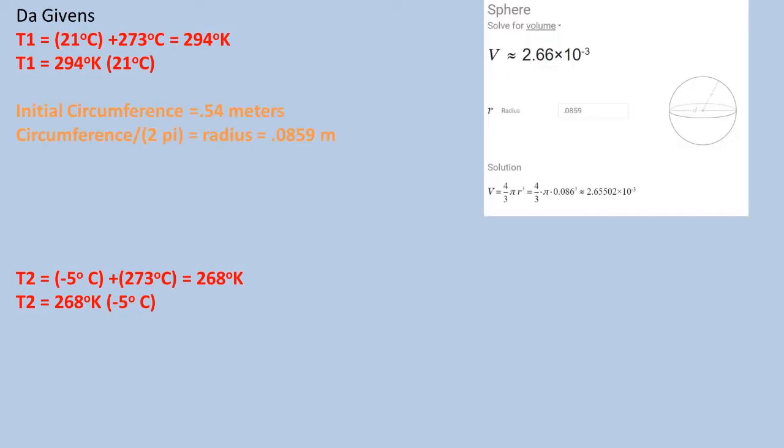To get volume, I'll be making a pretty hefty simplification. We will assume the balloon is a sphere, so we will need to convert the circumference to radius by dividing by two pi. We get a radius of 0.0859 meters.